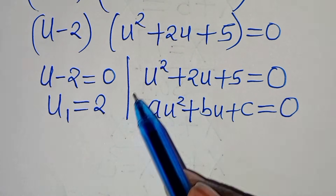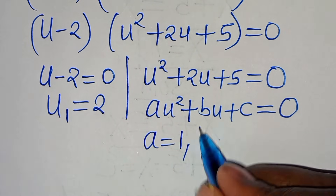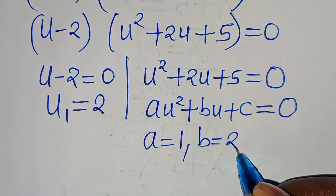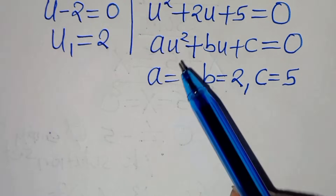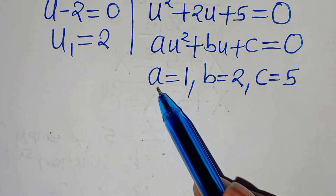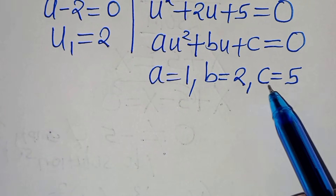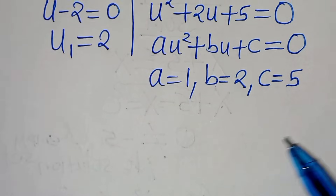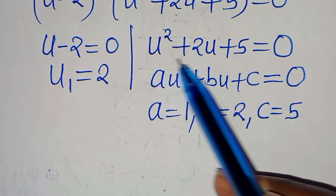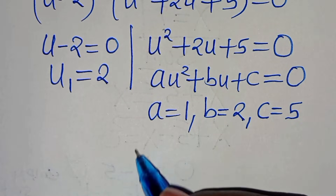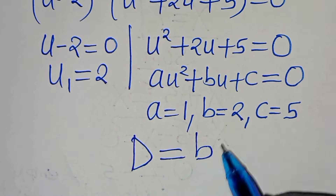From this quadratic equation we have a equals 1, b equals 2, and c equals 5. The next step is to assess the nature of the roots of this quadratic equation. We do this by determining the discriminant value, which is b squared minus 4ac.